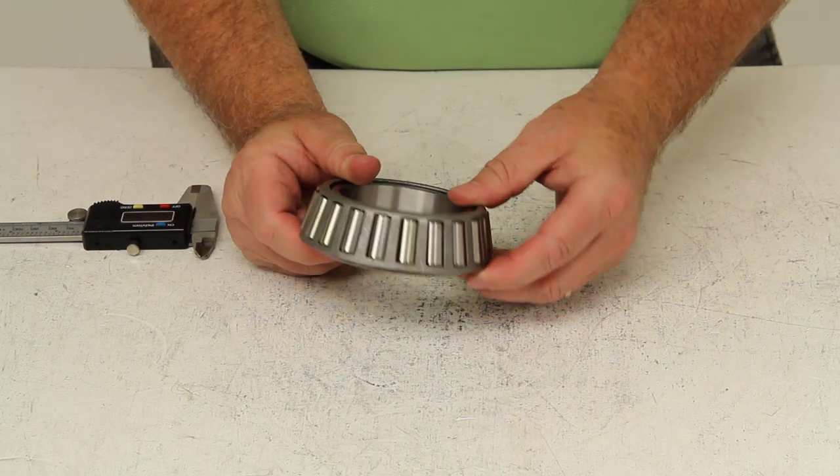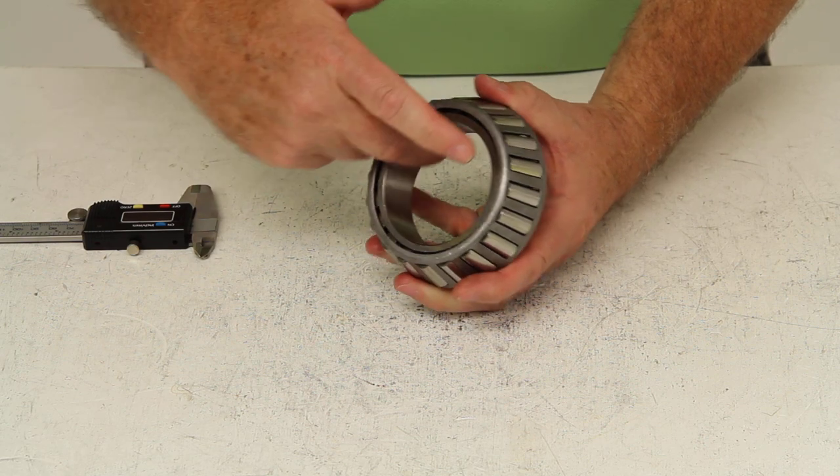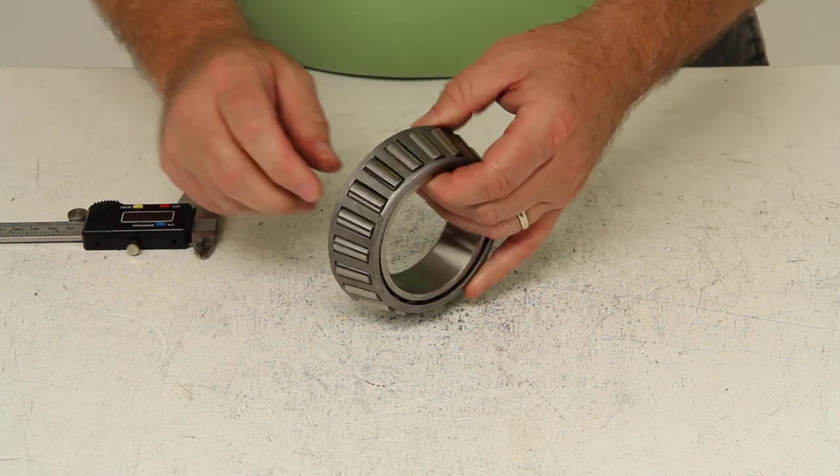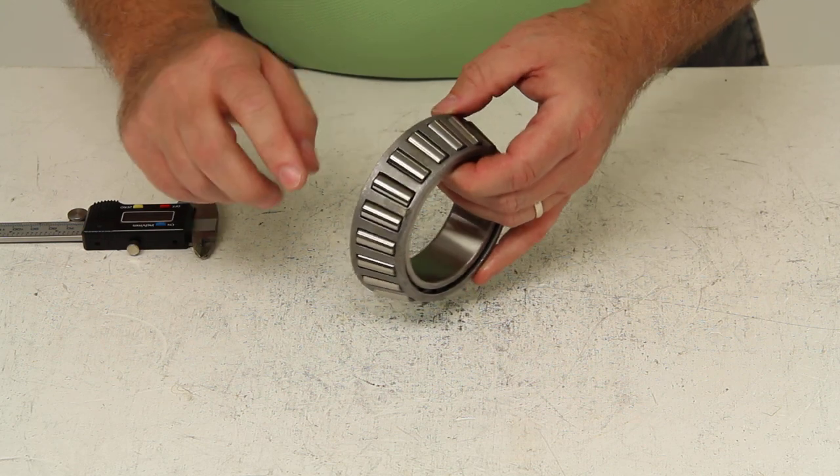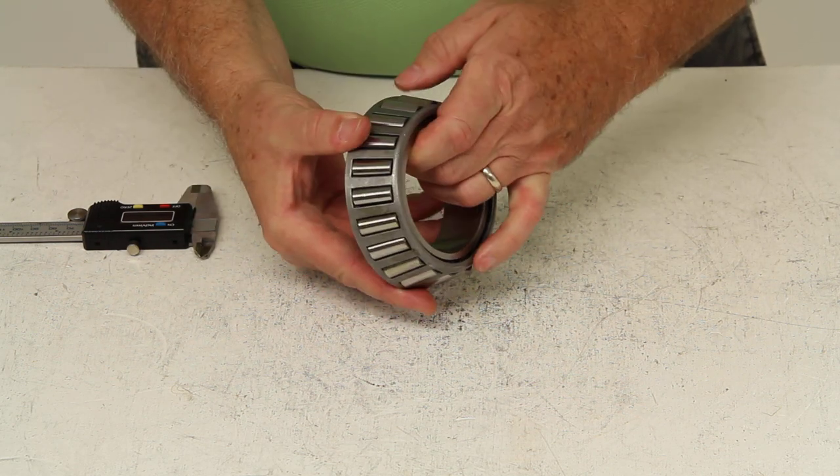This wheel bearing consists of three parts: the inner cone, the tapered roller bearings, and the roller bearings are held in a cage, or roller retainer as it's called.